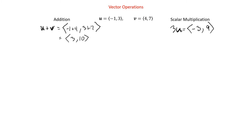Notice we don't have a vector times a vector as one of our basic operations. There are actually a couple different ways of multiplying vectors — one of them we'll see in the next topic, the dot product, and another called the cross product we'll see later when we get to three-dimensional vectors. For now we just have addition and scalar multiplication.